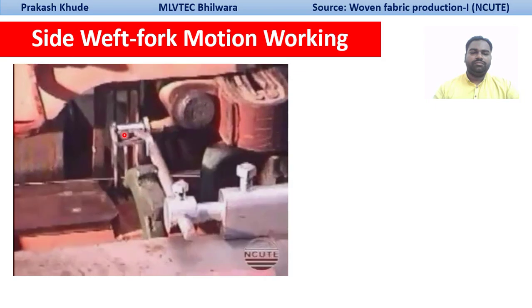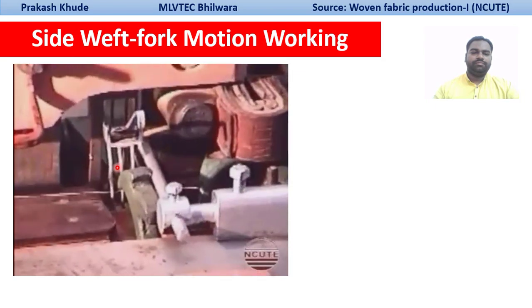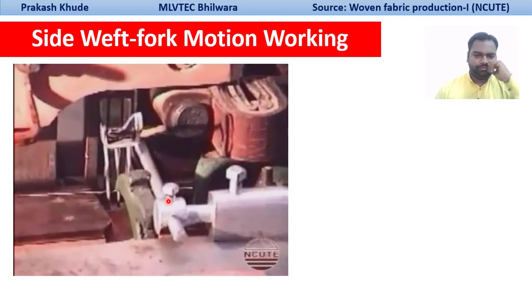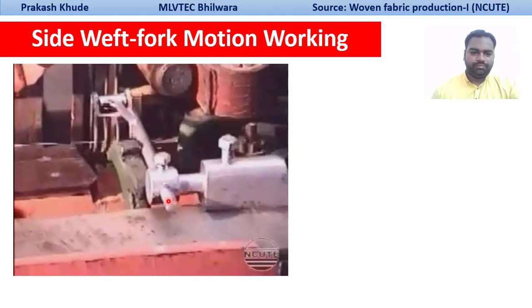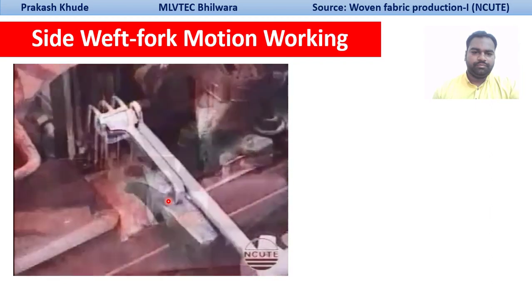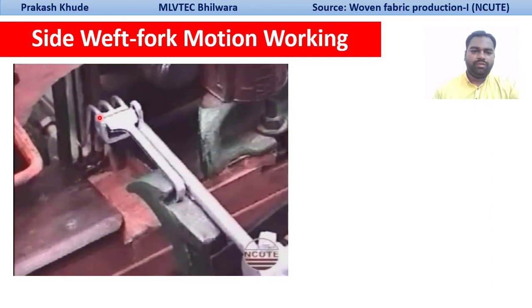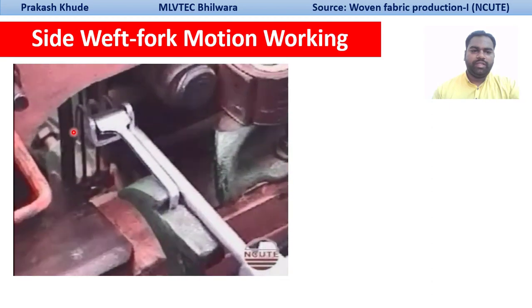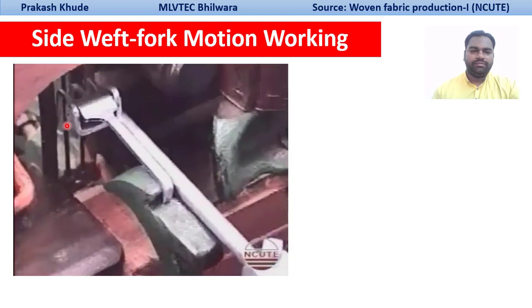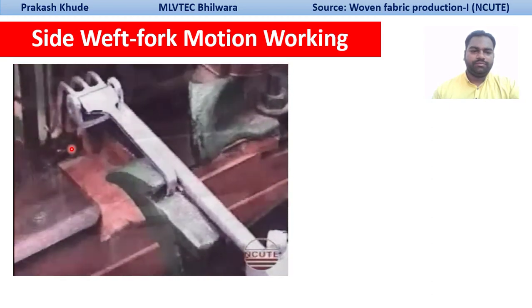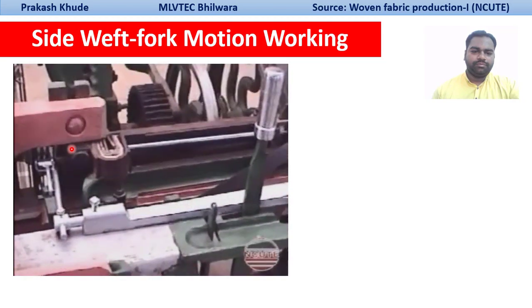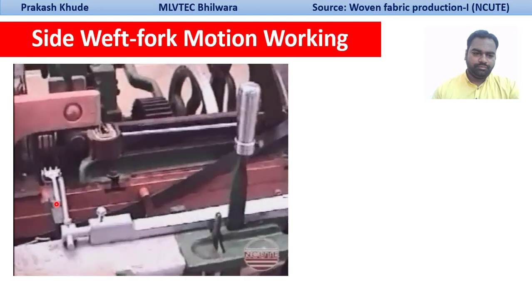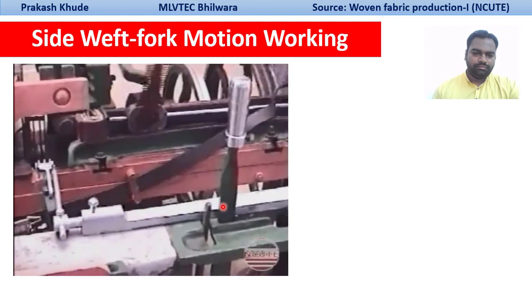This view shows a weft thread lying on the race board. Due to the weft tension, the hooked tail end of the fork is raised, and so the loom continues to run. In this second view, there is no weft — we can see the hooked tail end of the fork is resting on the hammer. In this action, the hammer pulls the hooked tail end, which causes the starting handle to be released.